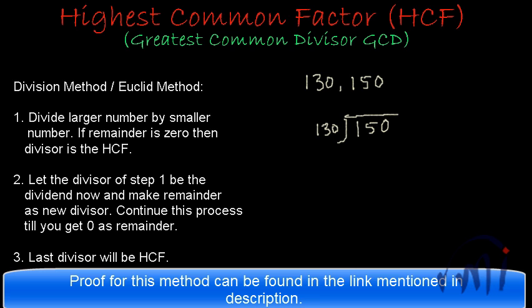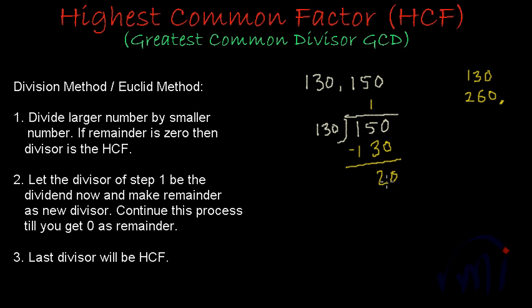So how many times will this 130 divide 150? So let me write the table of 130. For that I will just repeatedly add 130 to itself. So 130, 130 plus 130 is 260. I can stop here because this 260 is more than 150. So 130 will divide 150 1 times, 130 once is 130 and if I subtract I'll get 20 as remainder.